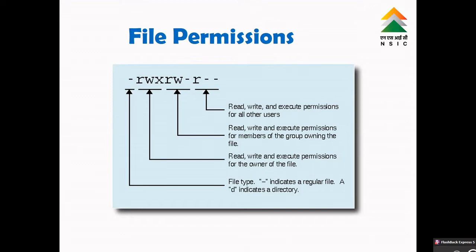If a file permission starts with a hyphen, then it indicates a regular file. If it starts with d, then it indicates a directory. The next 3 digits indicate the permissions of the owner of the file — whether the owner can read, write, and execute the file, mentioned in the 2nd, 3rd, and 4th digits of file permissions: r, w, x.